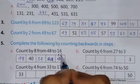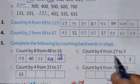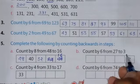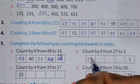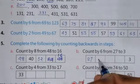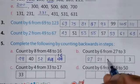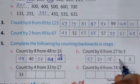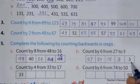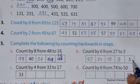Count by 6 from 27 to 3. So here is 27, now subtract 6 you will get 21, again subtract 6 is 15, again subtract 6 is 9, and the last will be 3.